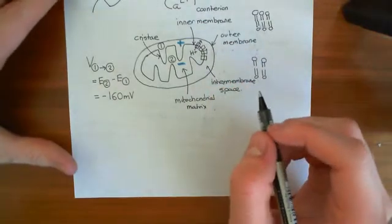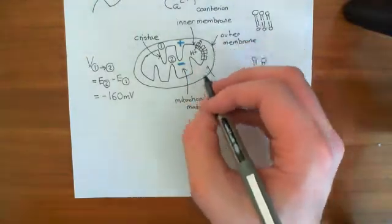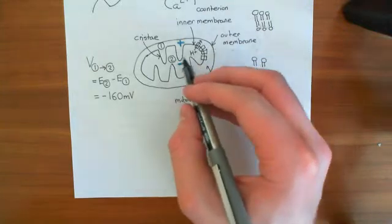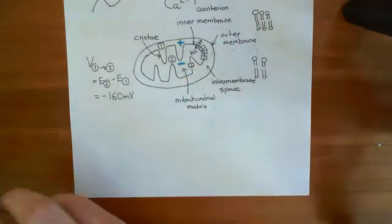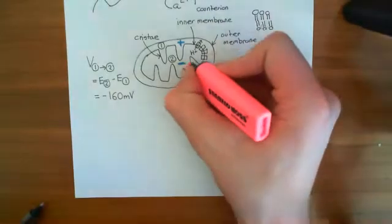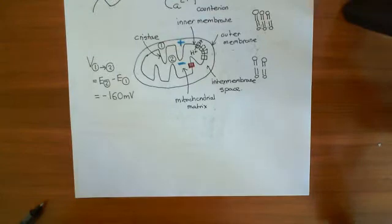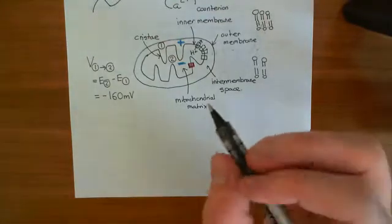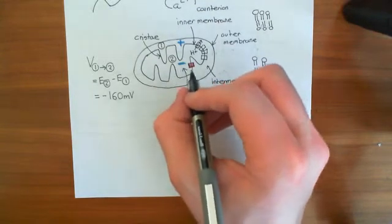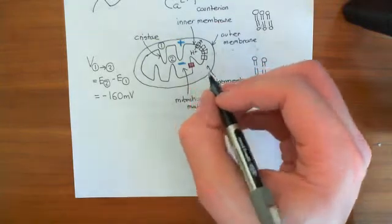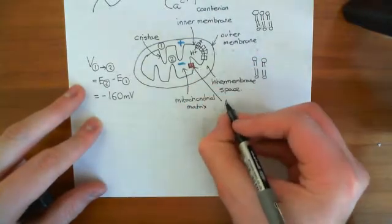There is another protein in the inner mitochondrial membrane called the ATP synthase, which allows protons to move back from the intermembrane space into the mitochondrial matrix down the electrochemical gradient. It uses the energy released by those protons moving down the electrochemical gradient to take ADP and inorganic phosphate and fuse them together to make ATP. So this is the ATP synthase.